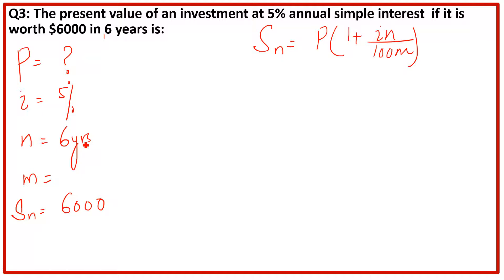Okay, so put the values here. 6000 future value is given, present value we have to find out: 1 plus i is 5%, n is six years, 100. Into 1 or 100 is okay because one multiply by anything remains same.